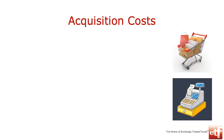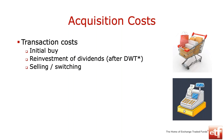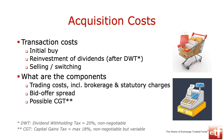Cost type number two. You might say: okay, ETFs are cheaper than index unit trusts, but you still have to go and buy this thing on the stock exchange, and you just told us about high transaction costs — is it really fair? So let's look at some of these acquisition costs. There's not just the initial buy that you do; there's also the reinvestment of dividends over time — DWT, dividend withholding tax — and there's also costs involved if you want to sell, switch, or do any form of trading in exchange traded products.